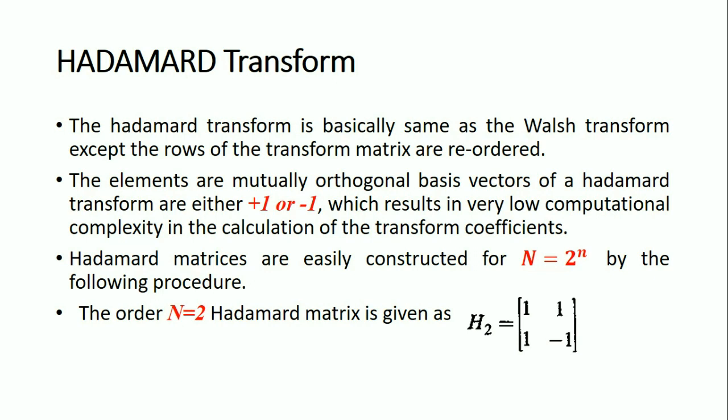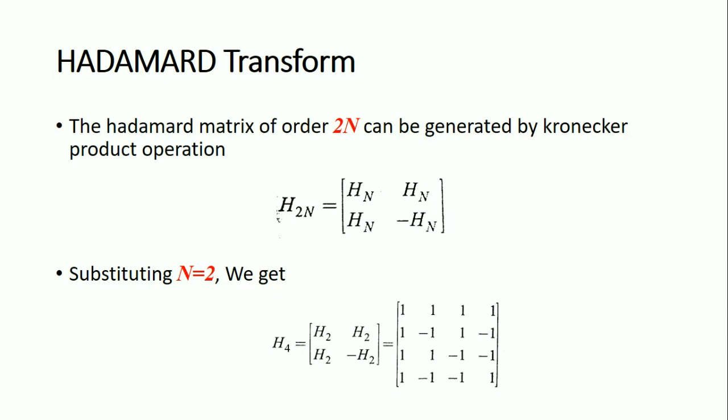Hadamard matrices are easily constructed for N equal to 2 to the power n by the following procedure. For the order N=2, the Hadamard matrix is given as H2 equals the matrix with elements [1, 1; 1, -1].